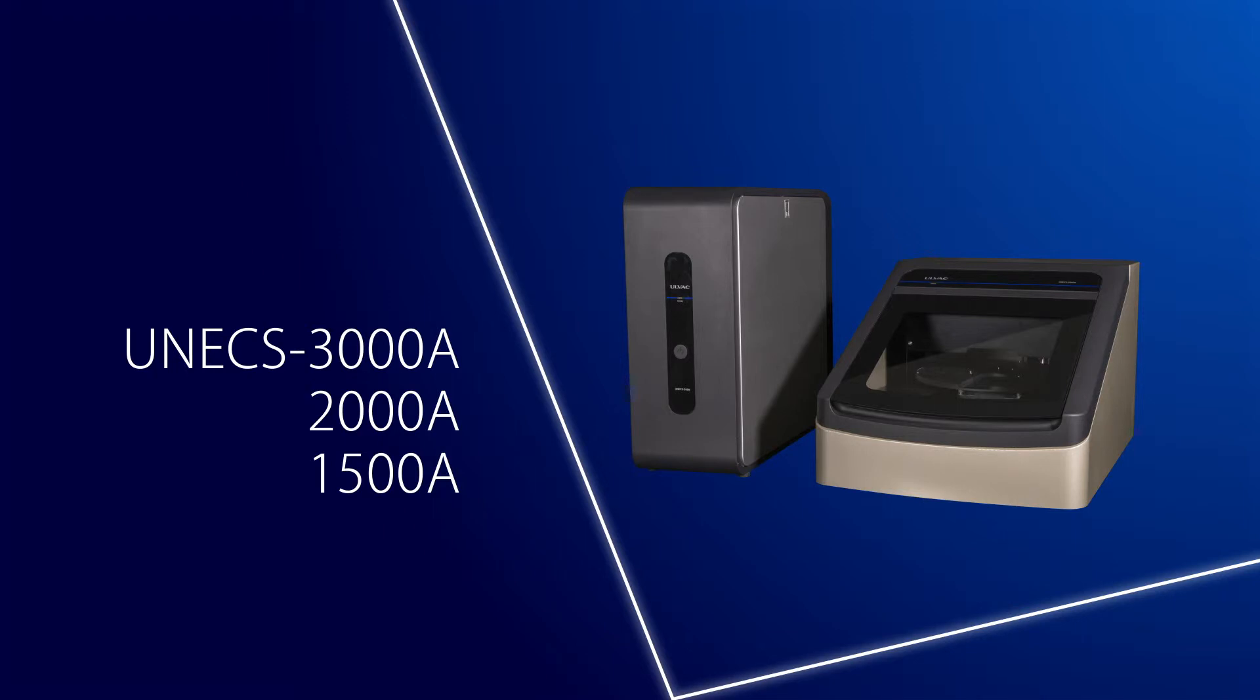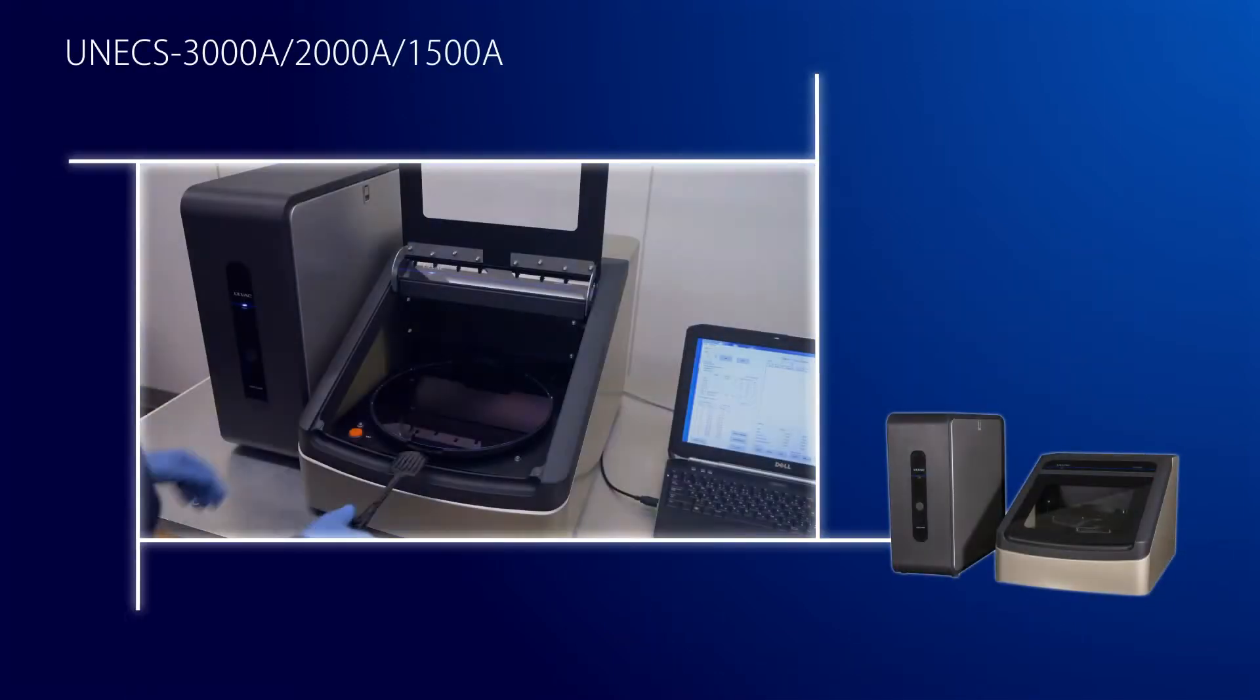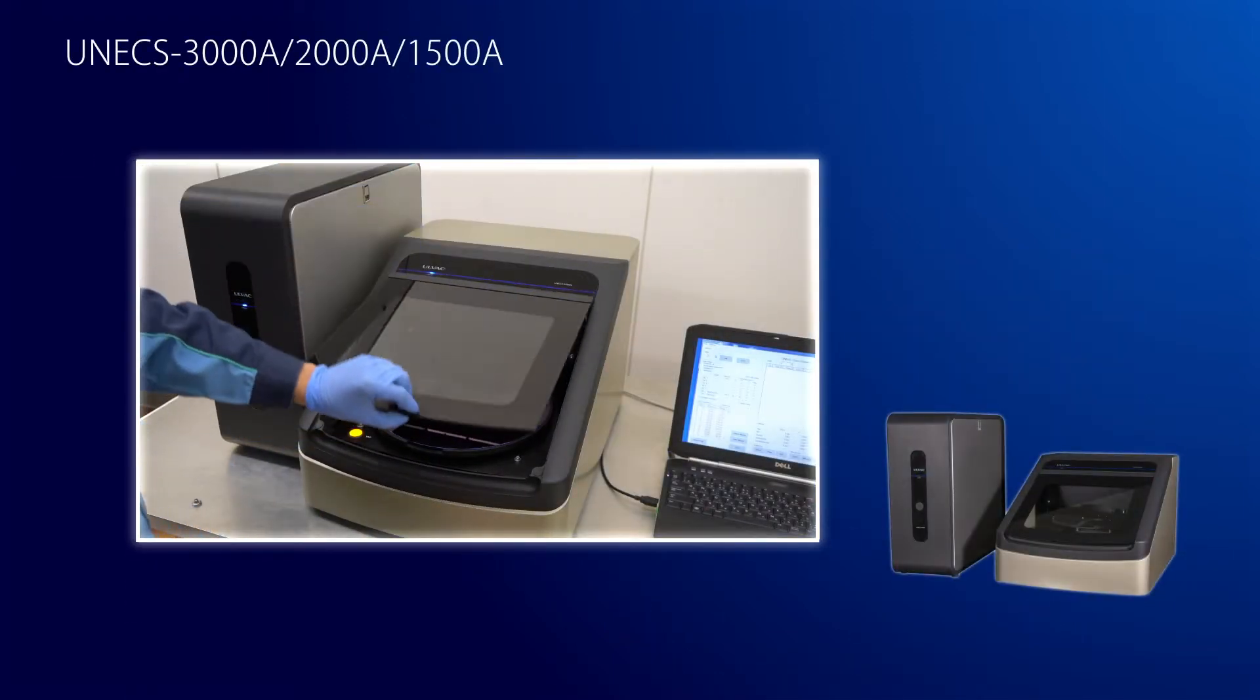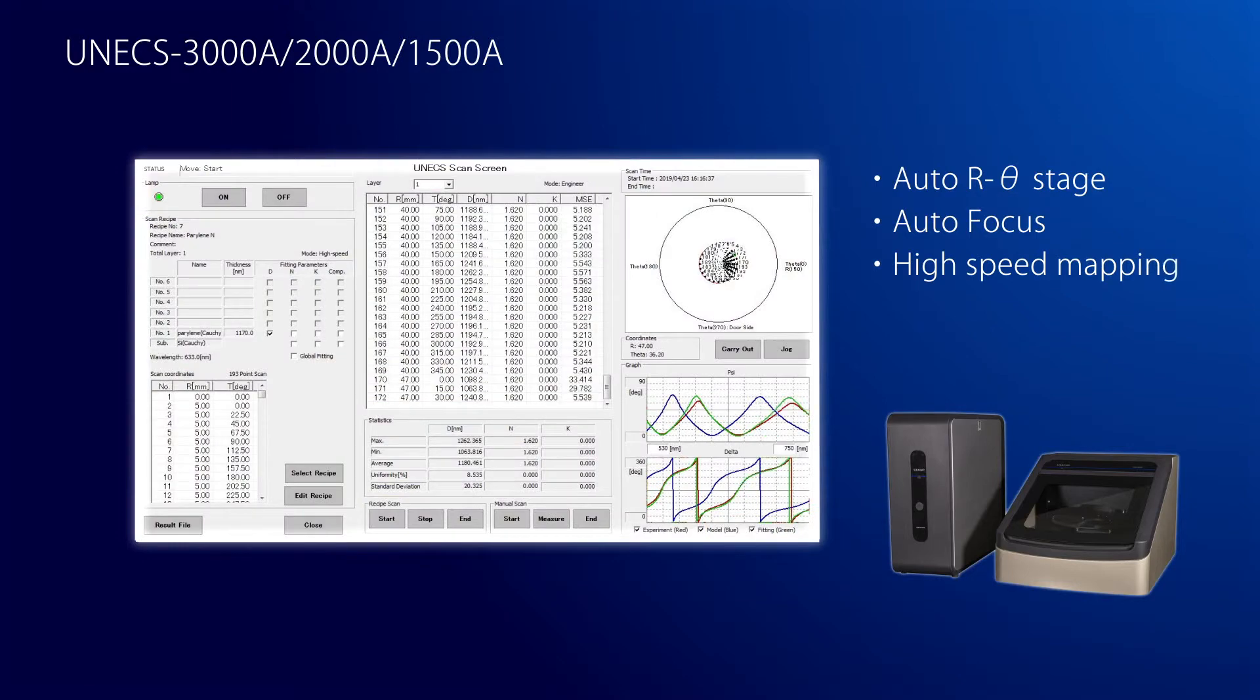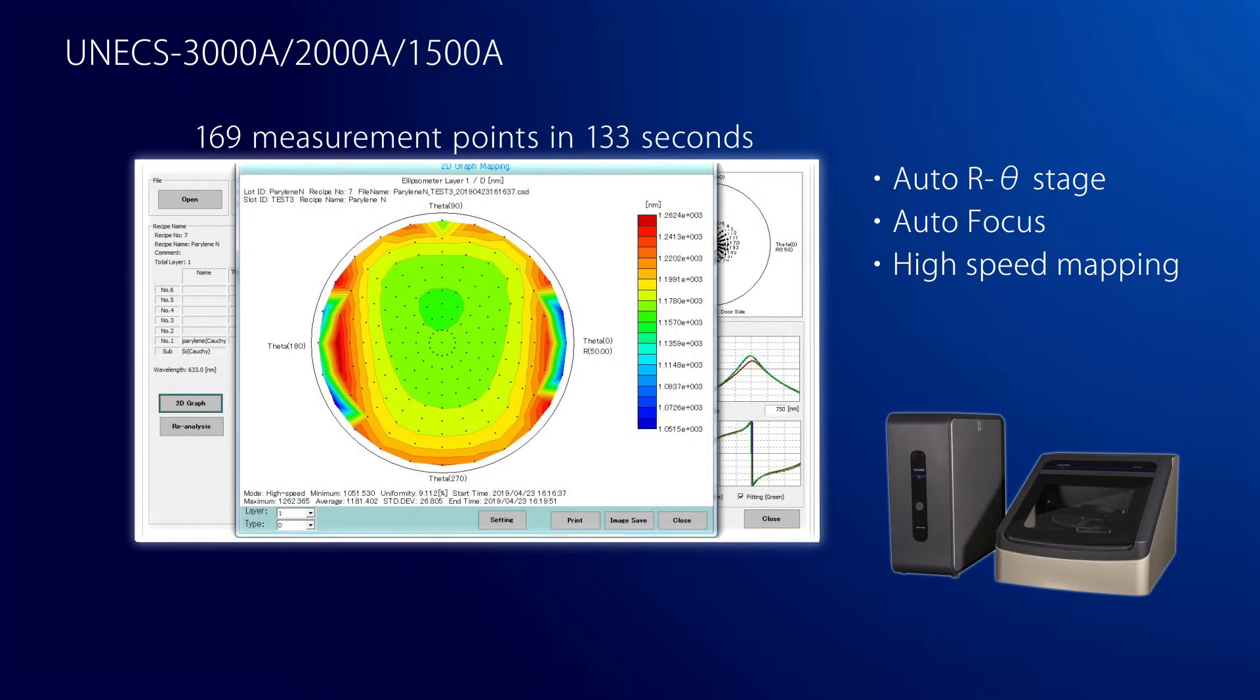UNEX 1500A, 2000A and 3000A are equipped with automated stages and automatic focusing function. It's possible to do auto-mapping measurements at an extremely high throughput.